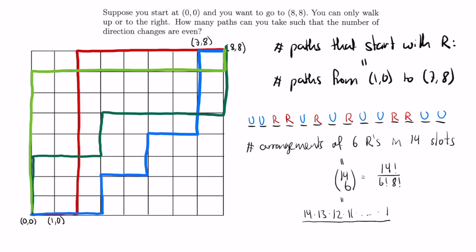But since the R's can permute between themselves without changing the path, and the U's can permute between themselves without changing the path, we have to divide by the number of permutations that won't change the path, which is 6 factorial and 8 factorial.